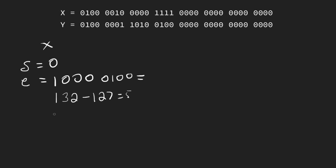So we know our value — we have to find our mantissa. We've got the eight exponent bits, and then our mantissa is all the following bits. So our value is going to be 1.0001111 times 2 to the fifth, and that's where we stop.